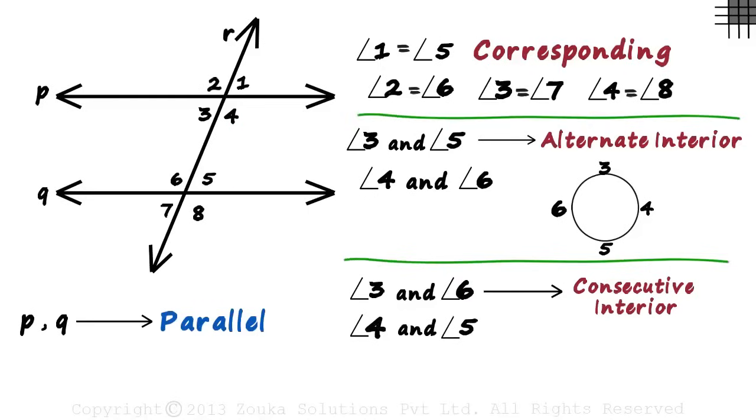Remember, there are two types of interior angles: alternate and consecutive. For alternate, we skip one and move to the next. For consecutive, we take the one that's immediately next to it.